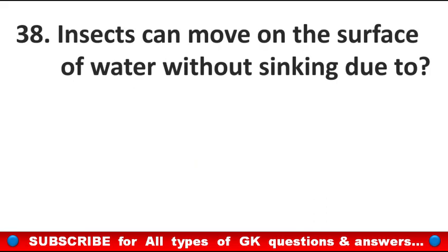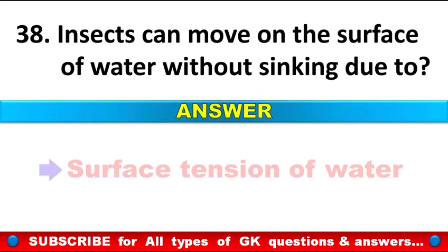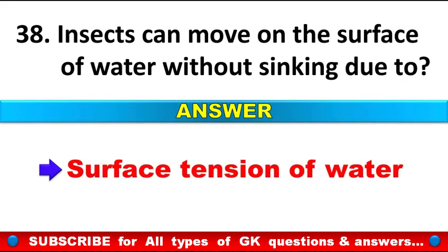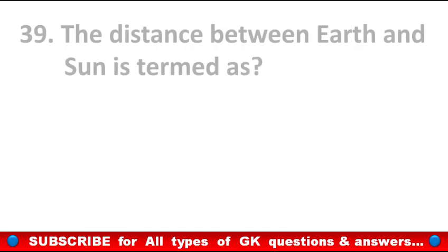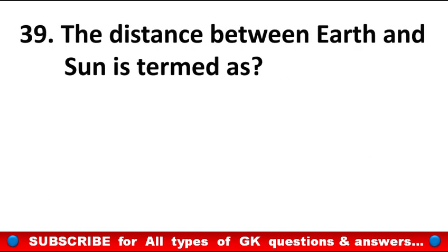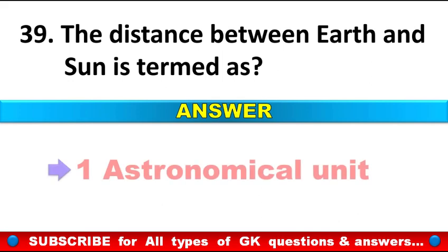Insects can move on the surface of water without sinking due to? Answer: Surface tension of water. The distance between earth and sun is termed as? Answer: One astronomical unit.